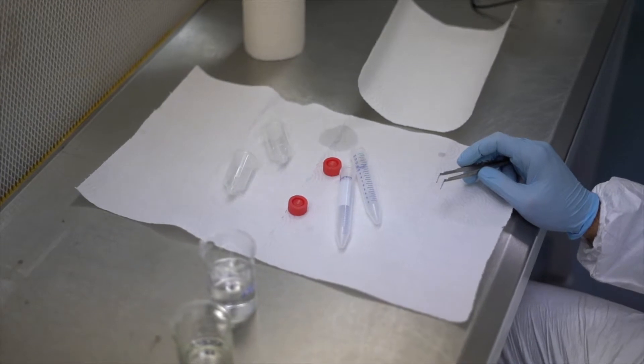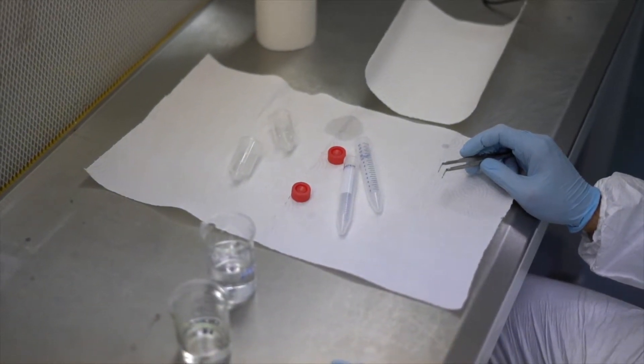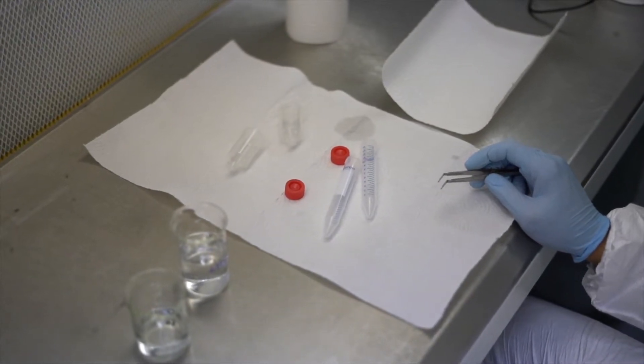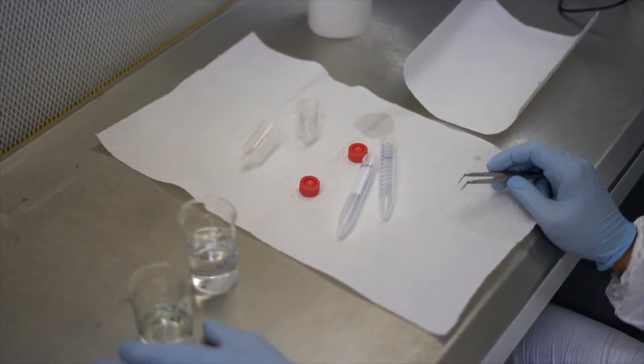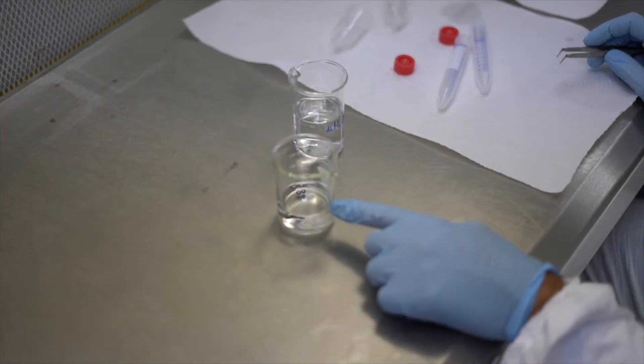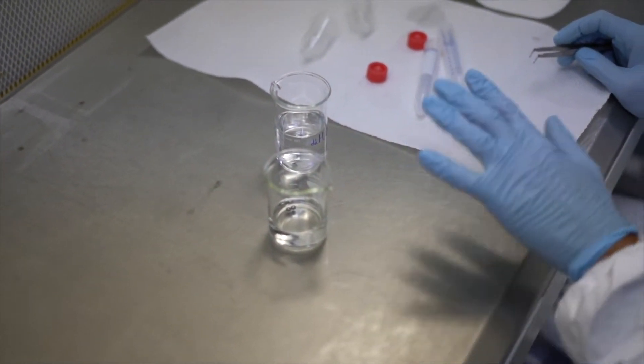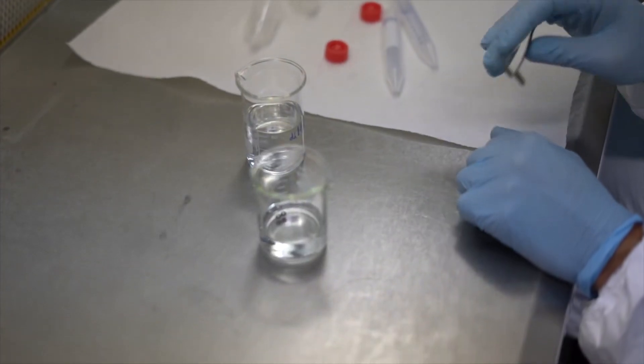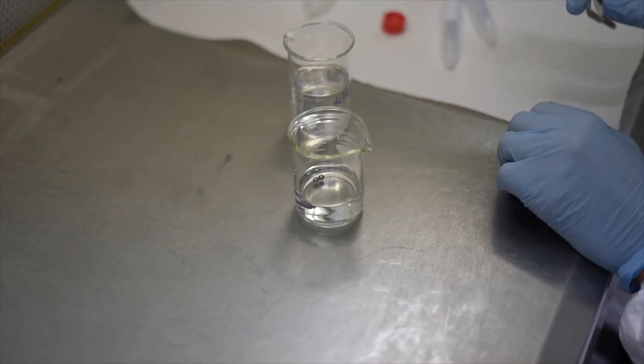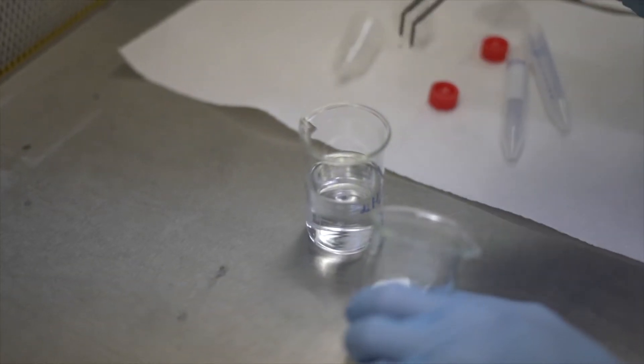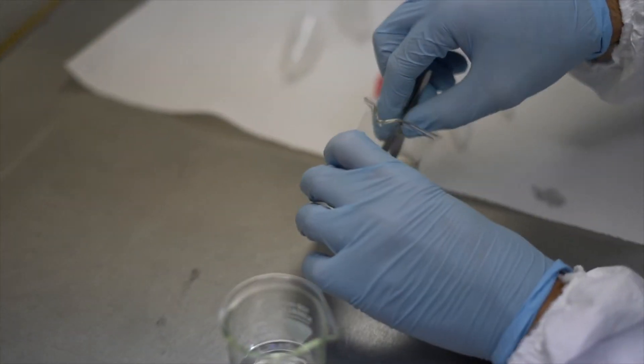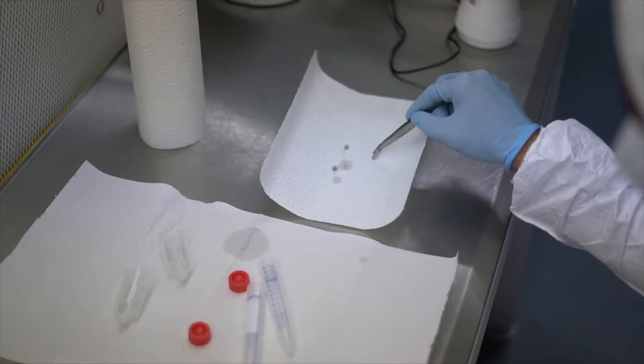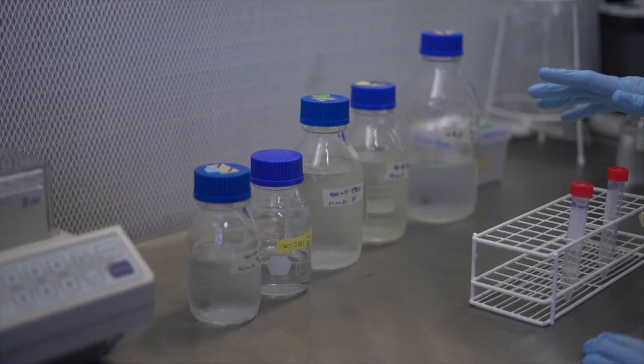Before starting we have to clean all the surfaces with bleach or irradiating with UV light. The same is true for some of the consumables like the beads, the metal beads we are going to use for grinding the plant material, as well as some other plastic consumables. We do that by a bleach bath, 20 minutes in bleach and then rinse it in distilled water. We can shortly dry them and then place them in the tubes with the samples.